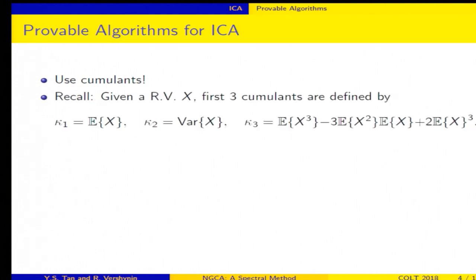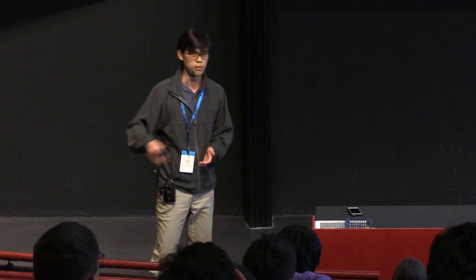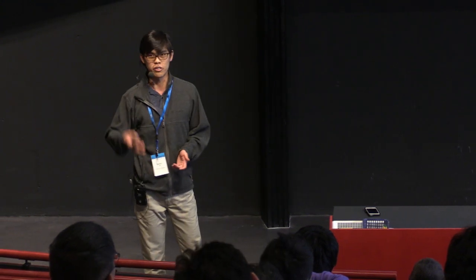So given the random variable X, the first three cumulants are defined as follows. So the first cumulant is the mean, the second cumulant is the variance. The third cumulant has this strange expression. And you can actually define cumulants of order M for every positive integer M. And as you can imagine, if you follow this trend, as M becomes bigger and bigger, you're going to get more and more complicated expressions.